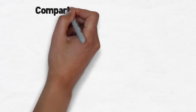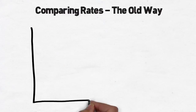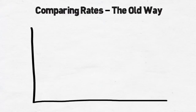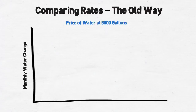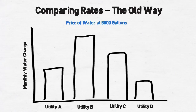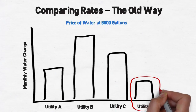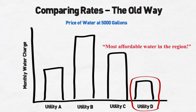But too often, water utilities summarize and compare their financial condition through one and only one metric: the price of water at one point of consumption. They display a bar chart that compares their monthly customer charge for water against what other peer utilities are charging. When only comparing prices alone, the incentive is to have the lowest price, period. Communities brag about having the shortest bar on this graph.